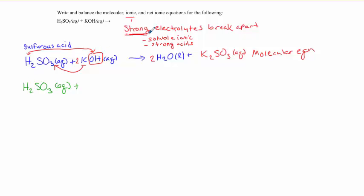All right. Now, KOH, because it has a metal out in front, it is an ionic compound, and it is aqueous. So it is a soluble ionic, which means it's a strong electrolyte, which means we break it apart.